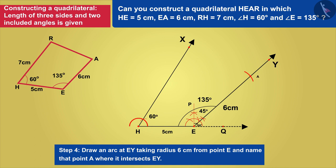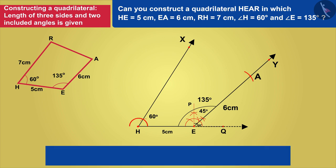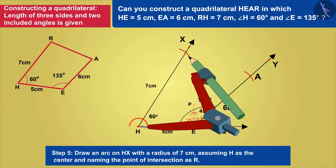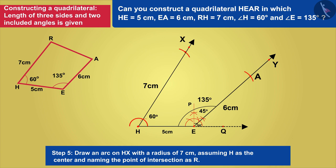We are given RH equals 7 cm. We will draw an arc on HX with a radius 7 cm, assuming H as the center, and name the intersection point as R.